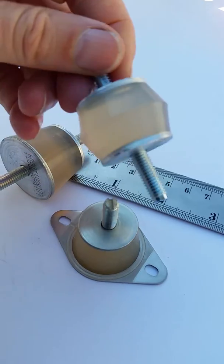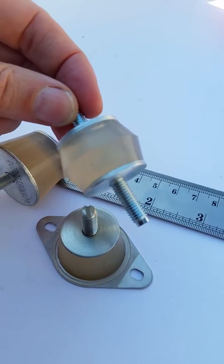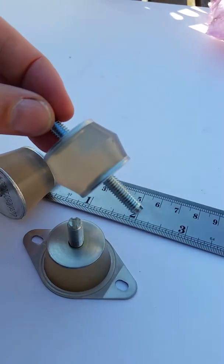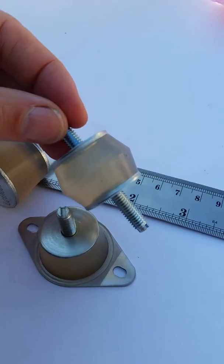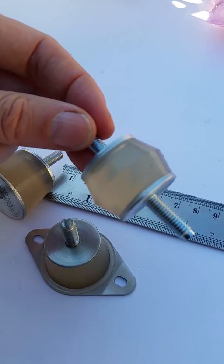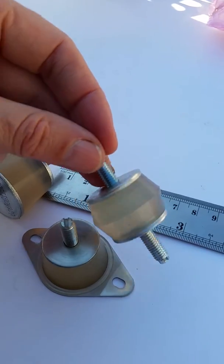A traditional shape mount here. This comes in four different hardnesses, again has an M6 thread. It's ideal for precision equipment, lab equipment, and so forth. It can damp loads from just eight kilos in total up to 50 kilos depending on the hardness of the mount.